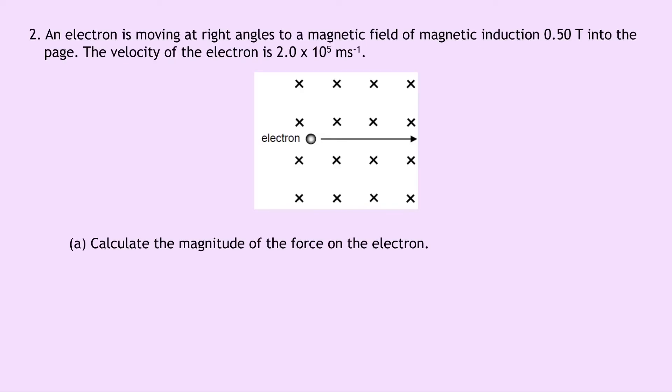Question 2 says that an electron is moving at right angles to a magnetic field of magnetic induction 0.5 tesla into the page. The velocity of the electron is 2.0 times 10 to the 5 meters per second. There's the electron moving to the right, and this time the magnetic field is going into the page. Part A says to calculate the magnitude of the force on the electron, just like we did in Question 1.